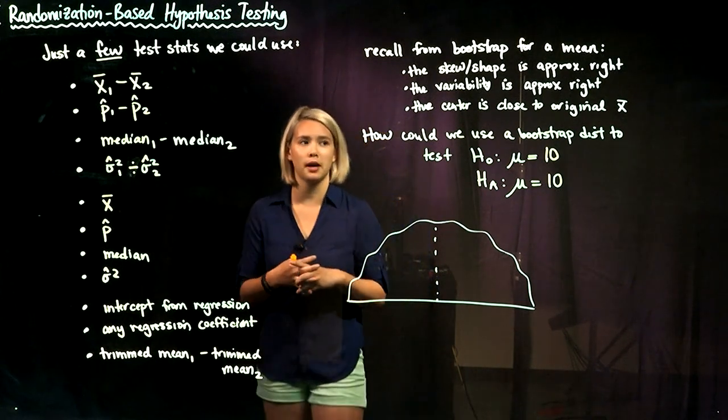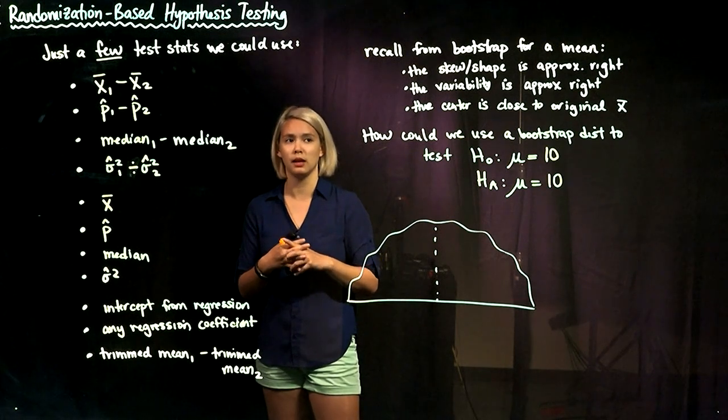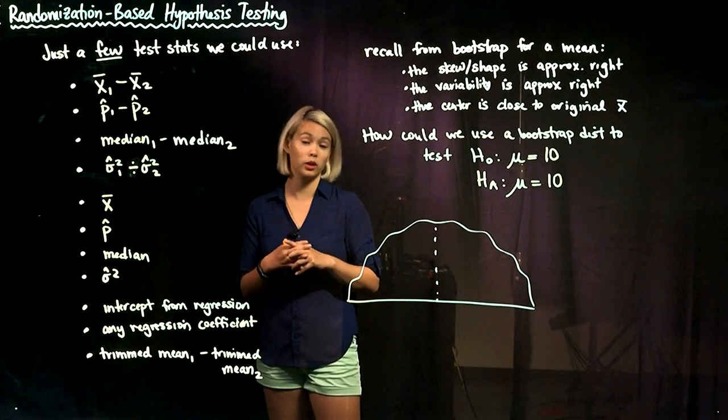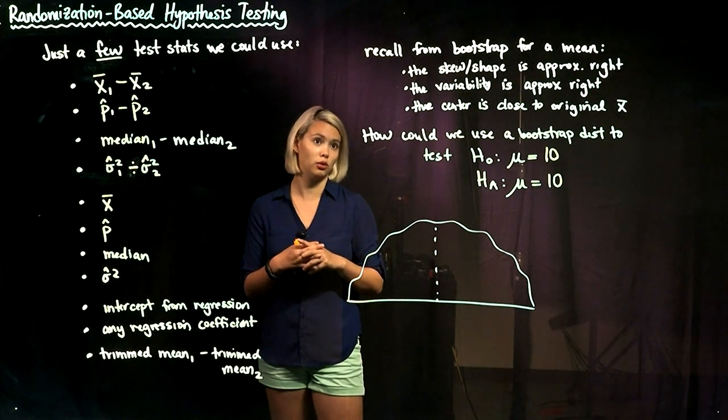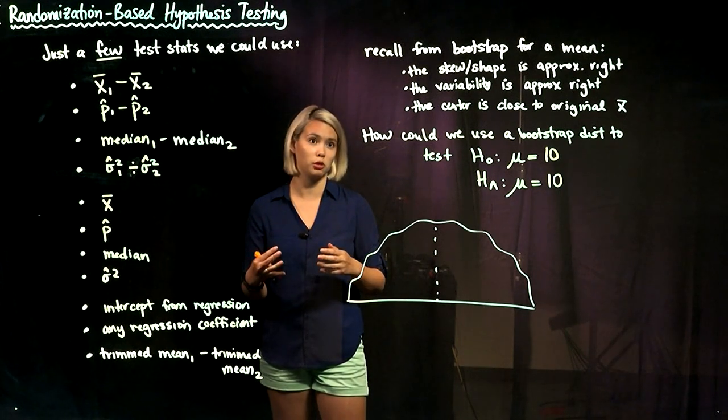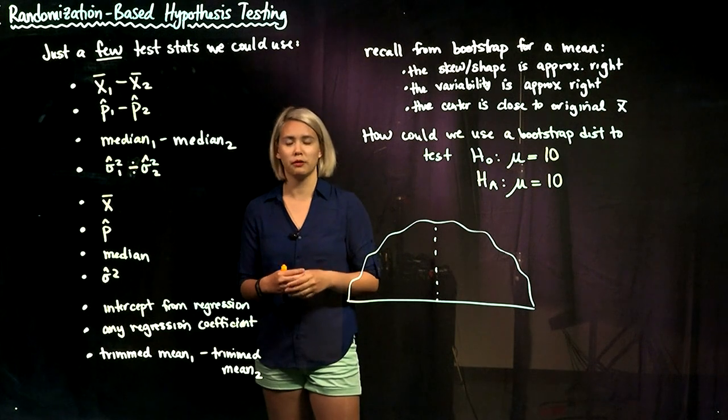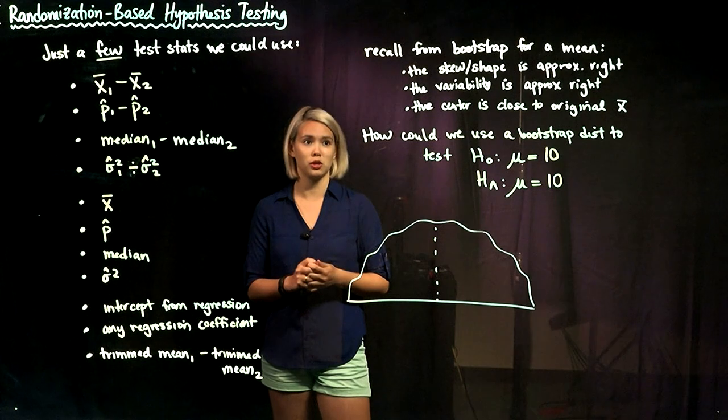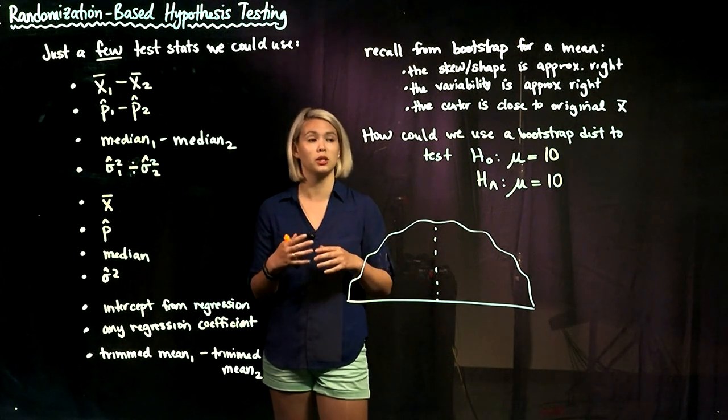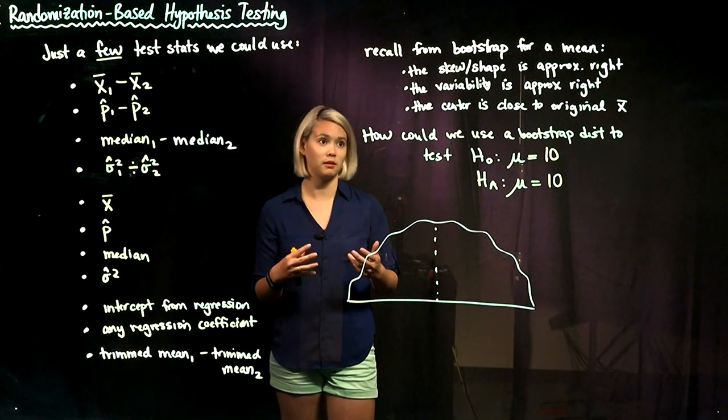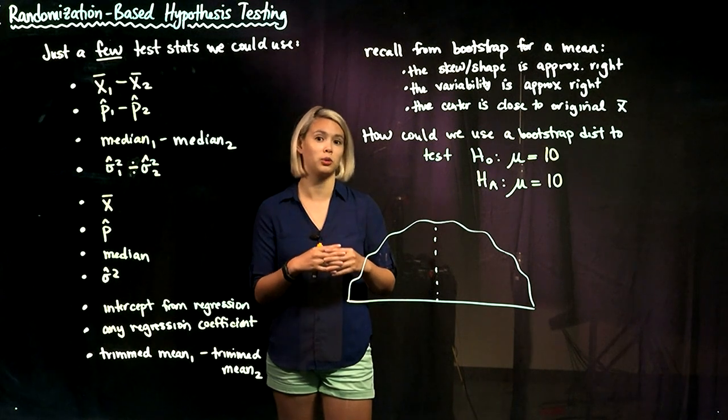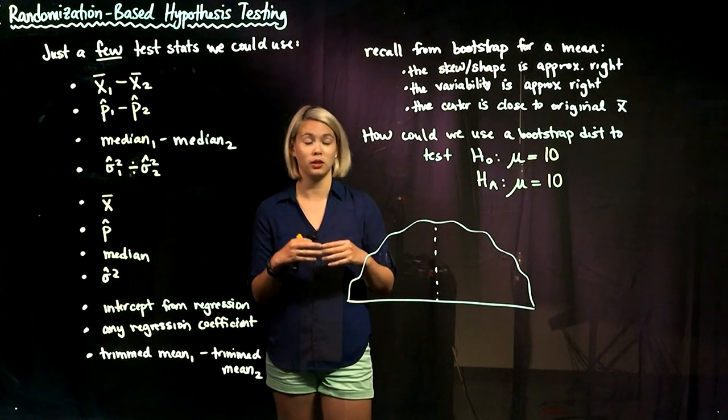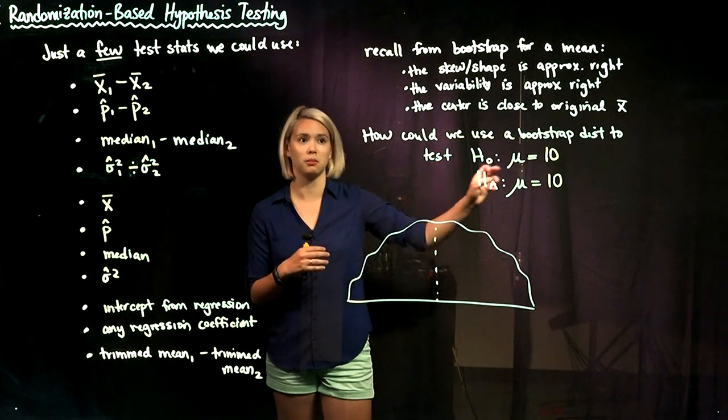If we remember back for the bootstrap, we randomly resampled the data with replacement to create what's called a bootstrap distribution. Remember, if we're doing like a bootstrap distribution for a mean, then the bootstrap distribution's shape and skew is going to be approximating the actual mean shape and skew, the actual distribution for the sample mean's shape and skew.